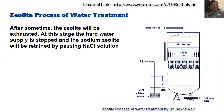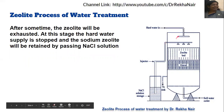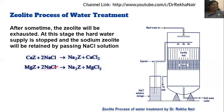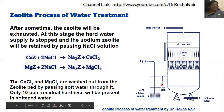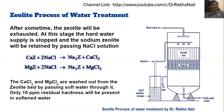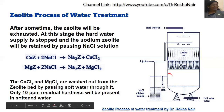To regenerate, we stop the hard water supply and pass a sodium chloride solution through the bed. The outlet is also closed. We then inject the sodium chloride solution, which reacts with the calcium and magnesium zeolite present in the bed and converts it back to sodium zeolite. We get sodium zeolite back, and the byproducts — calcium chloride and magnesium chloride — are washed out from the zeolite bed by passing soft water, and the calcium and magnesium ions are sent to the sink.